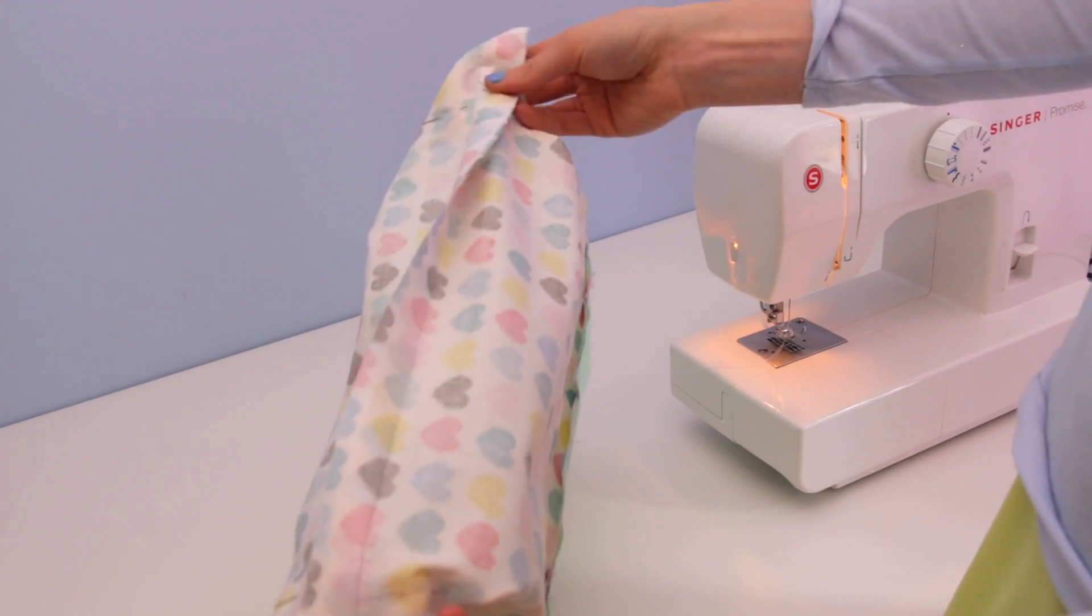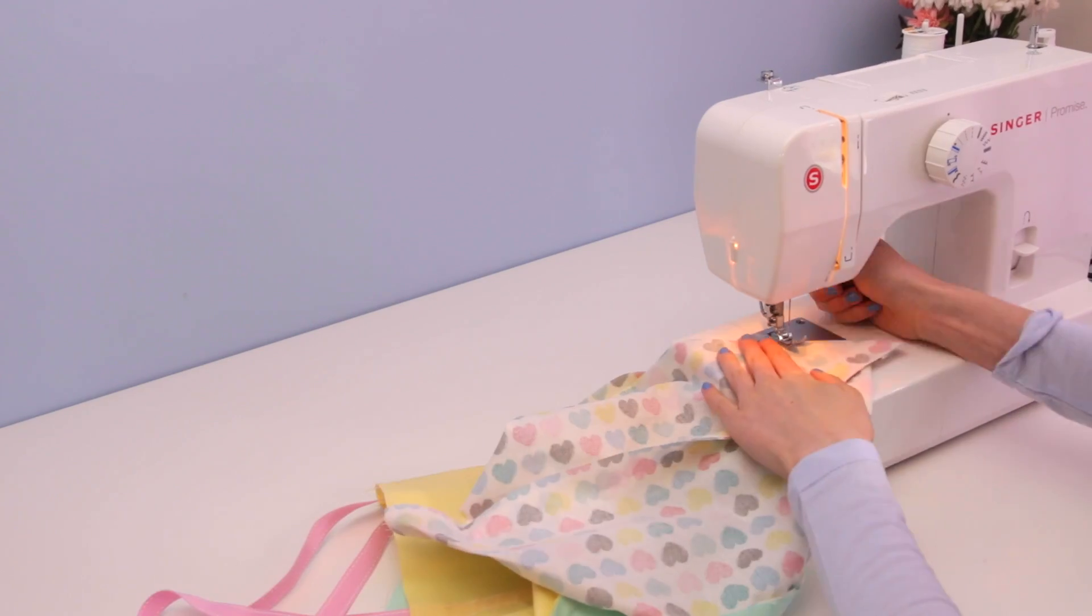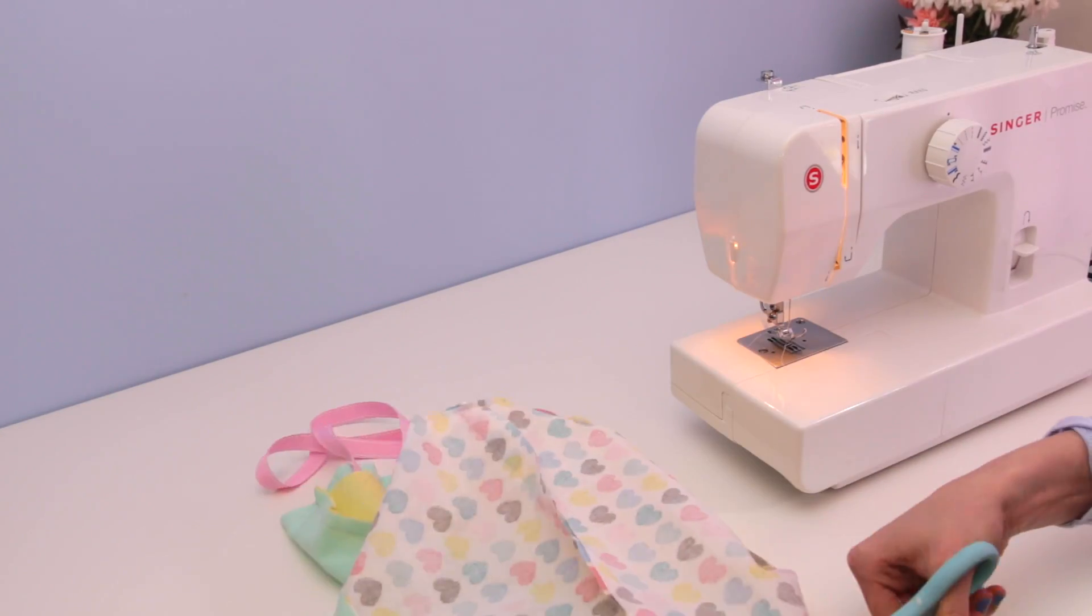Then fold off the bottom edges into triangles, and sew them together. Cut off the excess, flip it inside out.